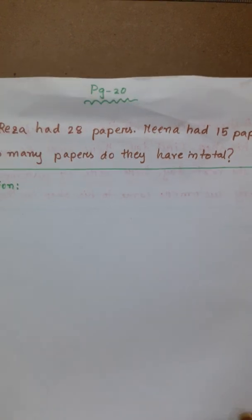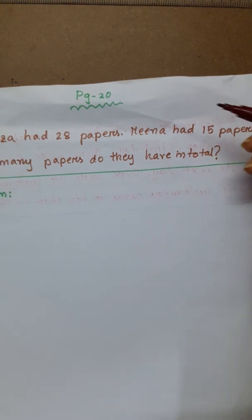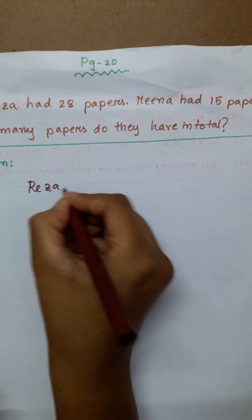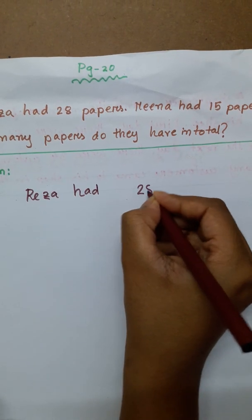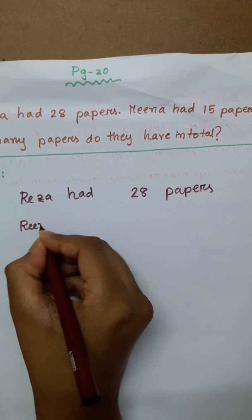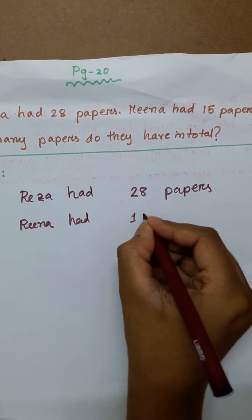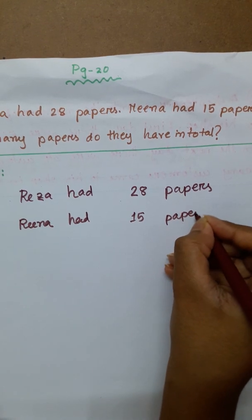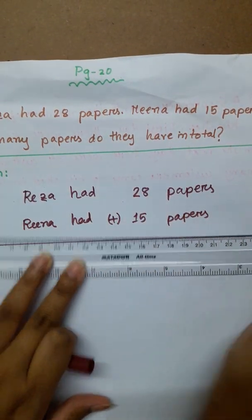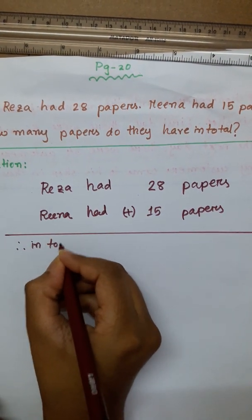First, Math page 20. Reza had 28 papers, Meena had 15 papers. How many papers do they have in total? Reza has 28 papers, Reena has 15 papers. In total, we have to write: Reza had 28 papers, Reena had 15 papers.